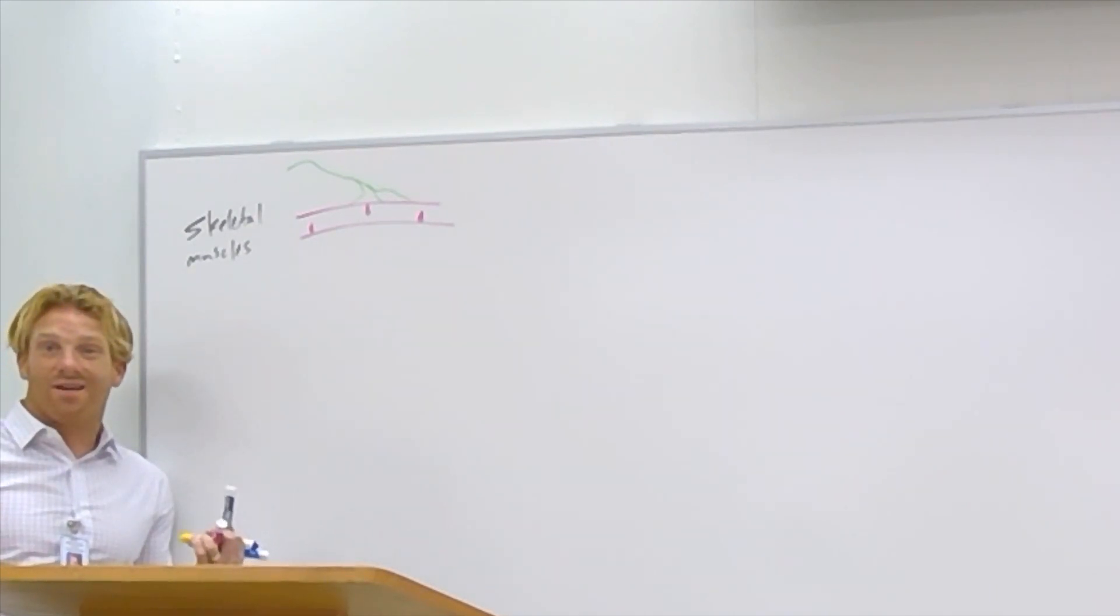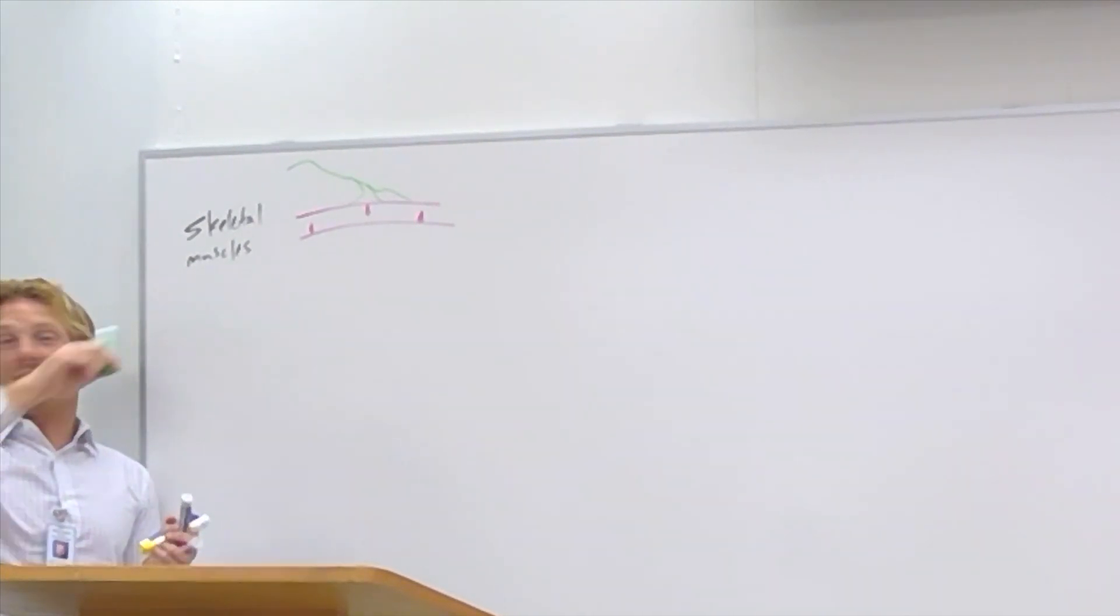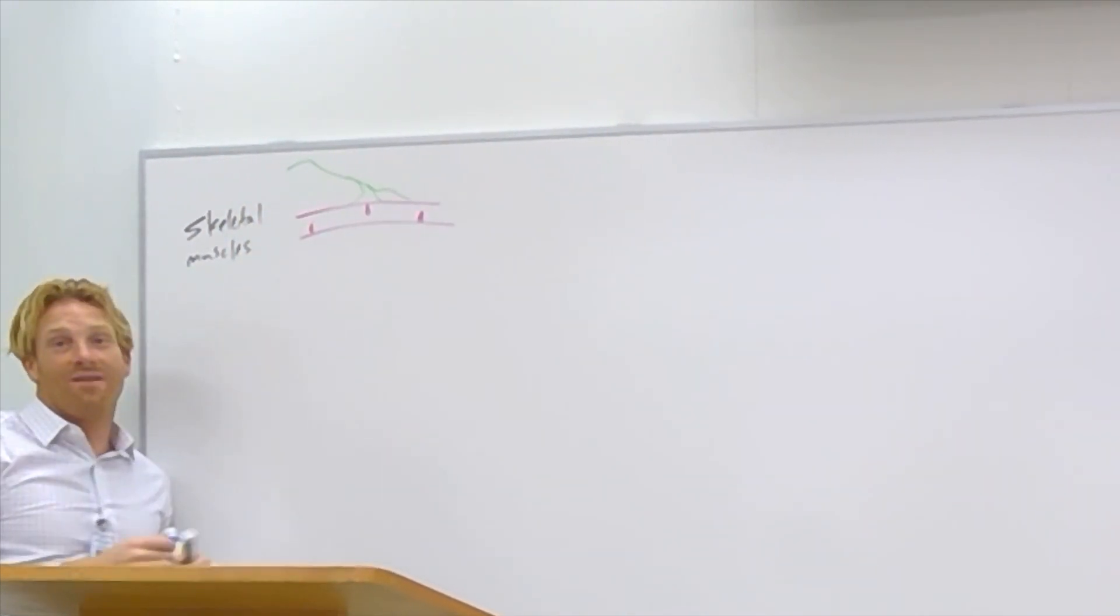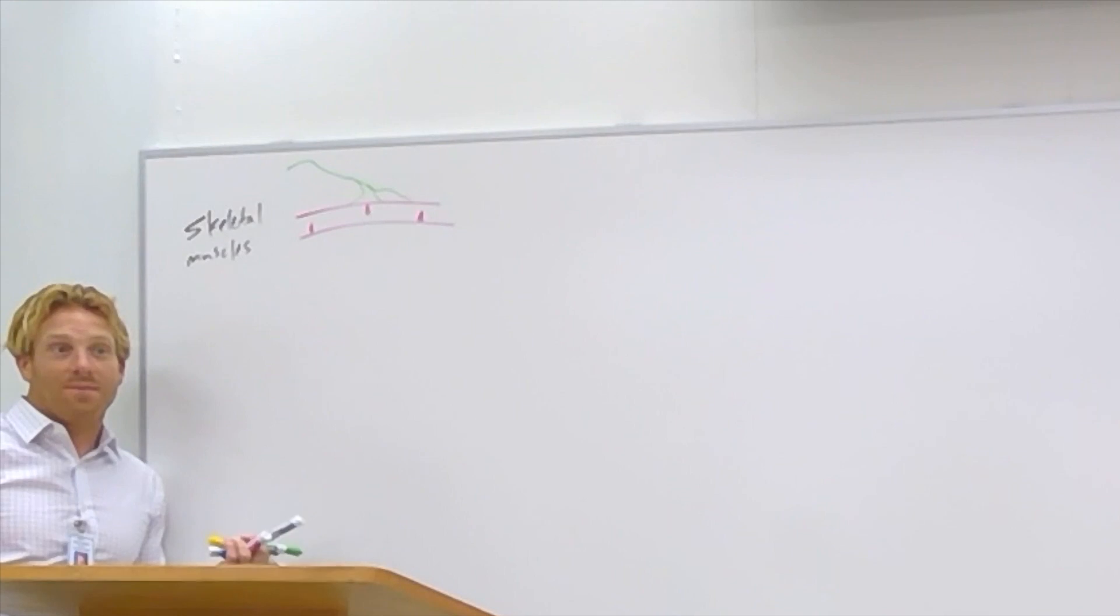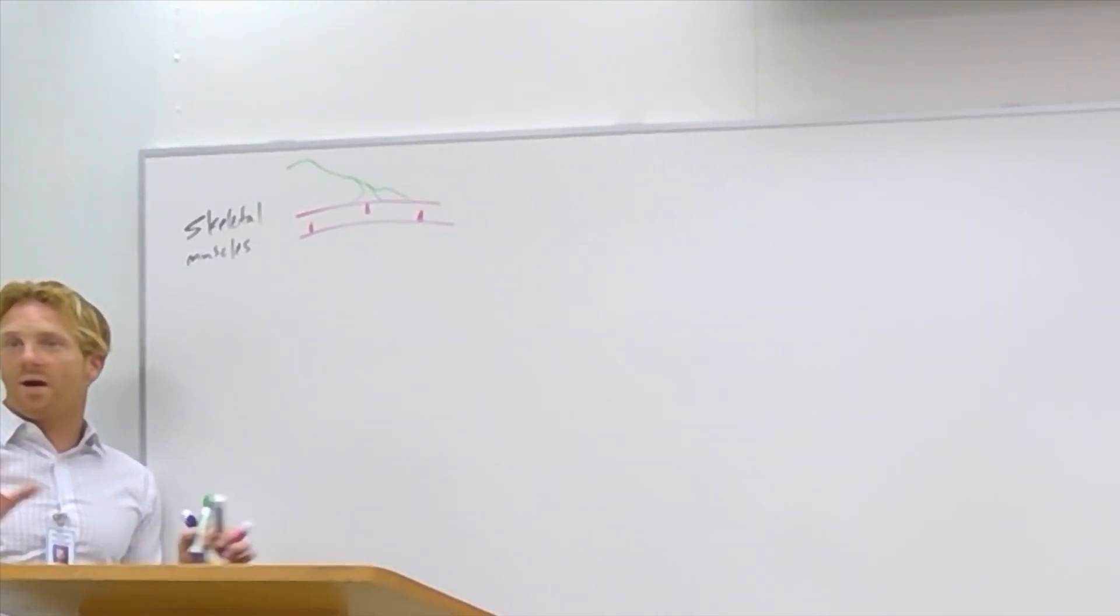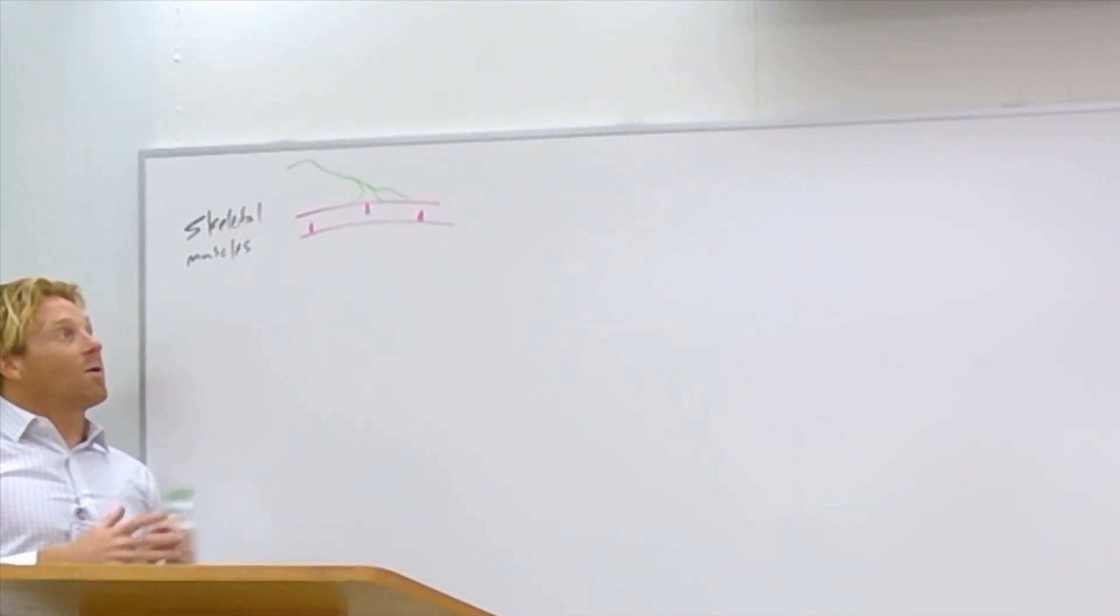It shouldn't, right? And if it does, it's a spasm or a cramp. So the only time this muscle cell should contract is if an action potential is sent down that motor neuron, that somatic motor neuron. And that's what makes it contract. Any other time, it doesn't contract.